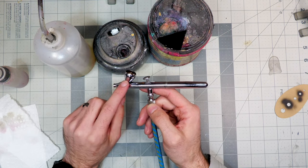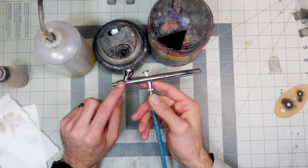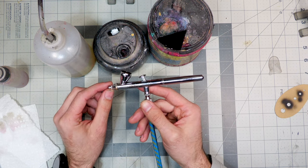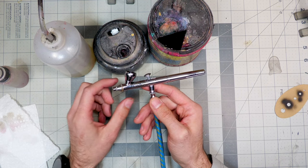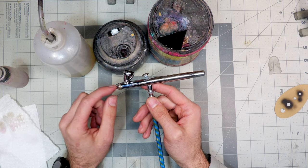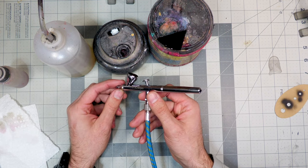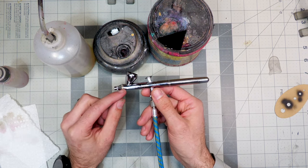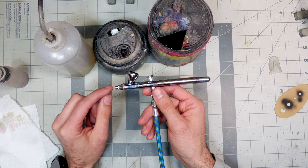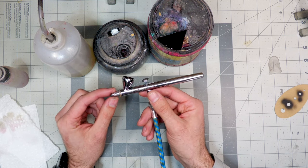Sometimes I will also run either some Windex or an airbrush cleaner through there too in between colors. If I'm switching from like a dark color like black to a light color, it needs that little extra cleaner inside of there to help. Do not use things like paint thinner because it will eventually eat away at the gaskets and the o-rings and seals that are in the front of there and mess up your airbrush.